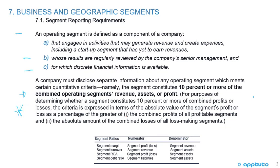So those are the quantitative rules with regards to 10% or more of the operating segment's revenues, assets, or profit — or in some cases, losses.